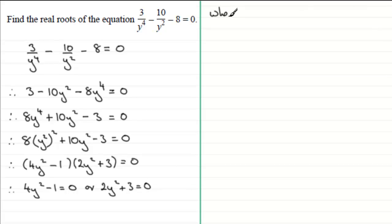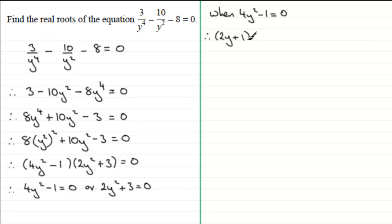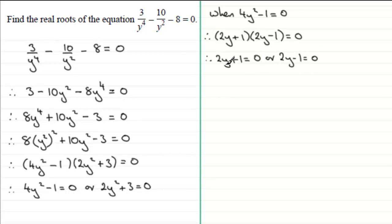For the first equation, 4y squared minus 1 equals 0. This factorizes as a difference of two squares — 2y is squared and 1 is squared with a minus between them — giving (2y plus 1)(2y minus 1) equals 0. Setting each factor to zero: 2y plus 1 equals 0, or 2y minus 1 equals 0.